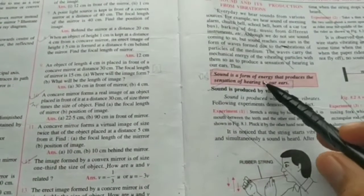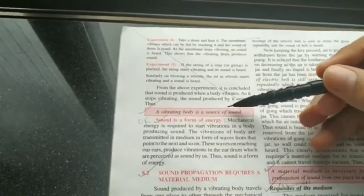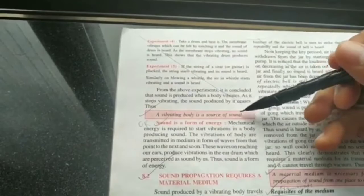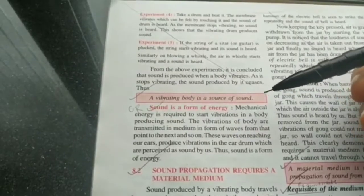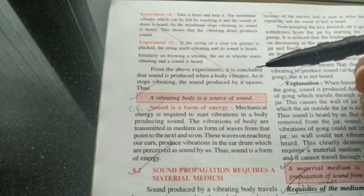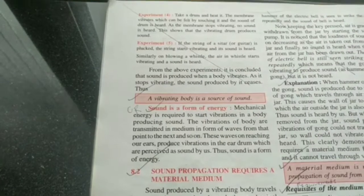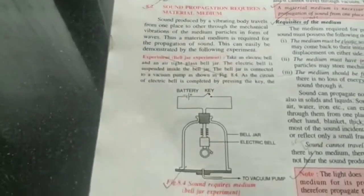Sound is a form of energy that produces the sensation of hearing in our ears. In our ears we have an eardrum which is very sensitive to vibrations, which are converted into electrical impulses that our brain interprets as sound. A vibrating body is always a source of sound. It is definitely a form of energy because the particles of the medium actually vibrate to transfer this energy from one place to another. It's a form of mechanical energy, and sound needs a medium to travel — it cannot travel through a vacuum.